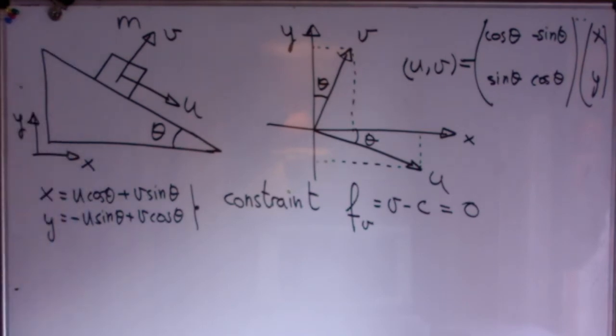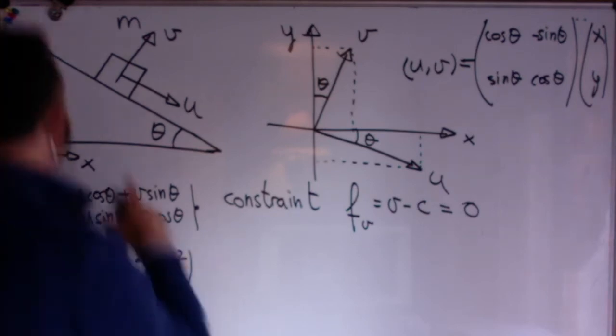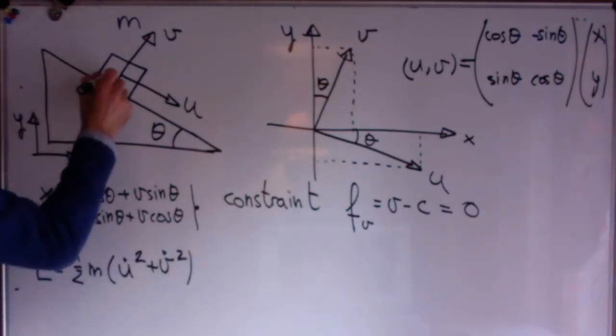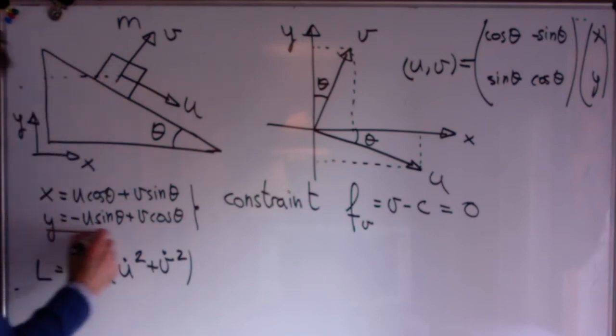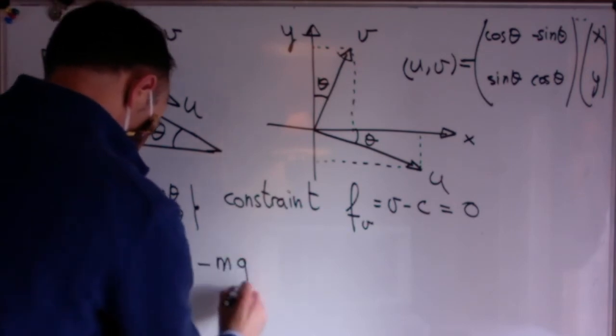Now I can write the Lagrangian. Be careful as I have to write it for both coordinates u and v, even though I know there is a constraint. But remember that the constraint is applied right after the Lagrange equations. First the kinetic energy, one half of m u dot square plus v dot square. Now the potential energy, mgy, but I now write y in terms of u and v.